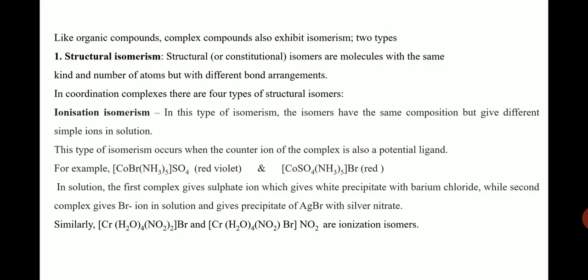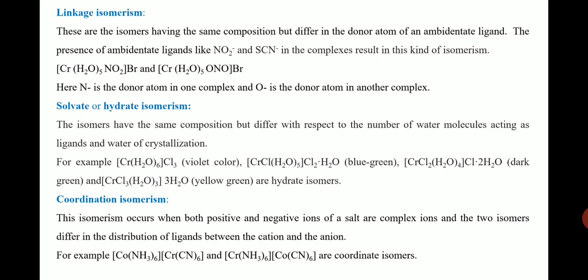Now consider linkage isomerism. This type mainly involves ambidentate ligands. An ambidentate ligand contains two donor atoms, but only one can donate the lone pair of electrons toward the central metal atom to form a coordination bond.